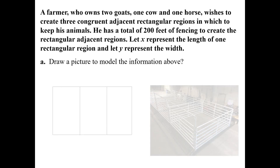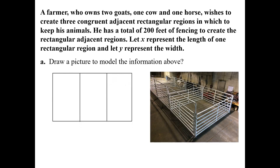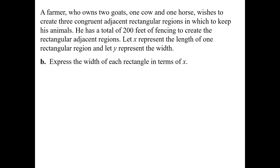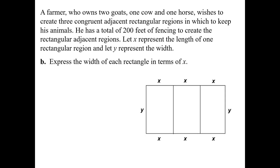Let's take a look at what that may look like. Off to the bottom right you can see that we have three congruent adjacent rectangular regions. In each of those he would house two goats in one, a cow in the other, and in the final space he would house a horse. We have to remember that he has a total of 200 feet of fencing that he's going to use.